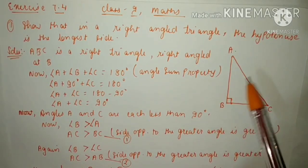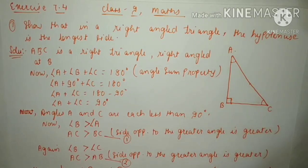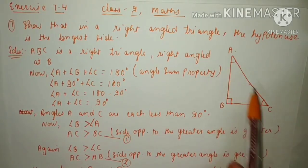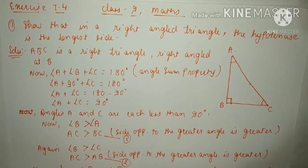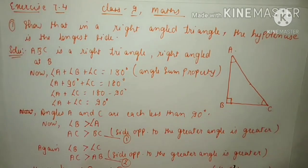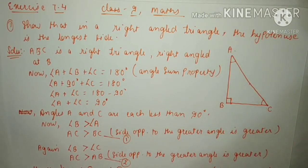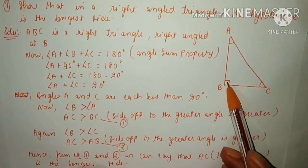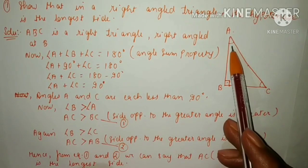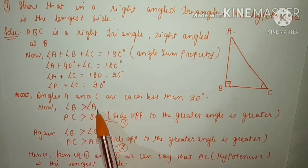That means the sum of angle A and angle C equals 90 degrees, so both individual angles will be less than 90 degrees. Therefore, angles A and C are each less than 90 degrees. We can see that angle B equals 90 degrees and angle A is less than 90 degrees, which means angle B is greater than angle A.